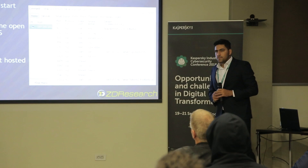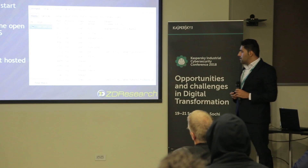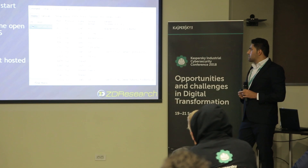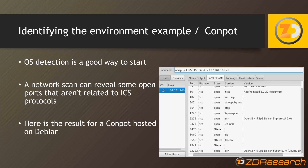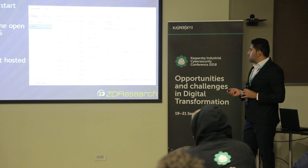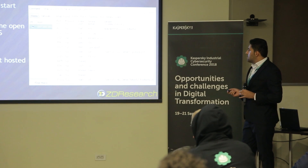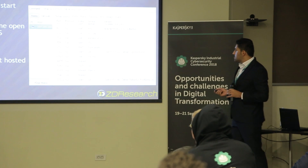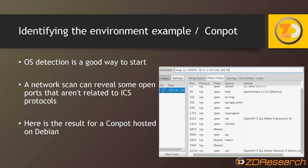For an example of OS detection, this is a scan of a remote Conpot instance using port scanning — even without using the OS detection flag (-O switch). You can see open ports for industrial protocols like S7 and Modbus, but the other open ports are not related to any industrial system, revealing it is a Linux system, not a PLC device.